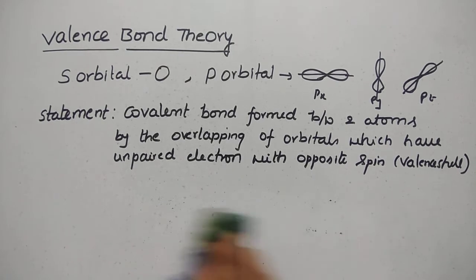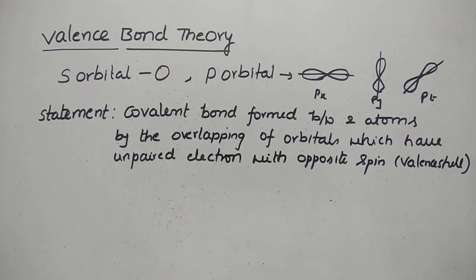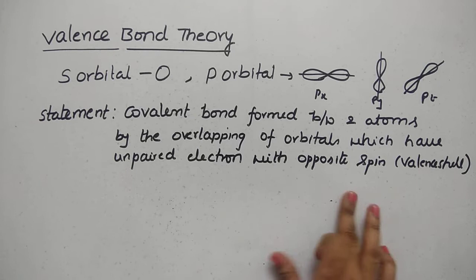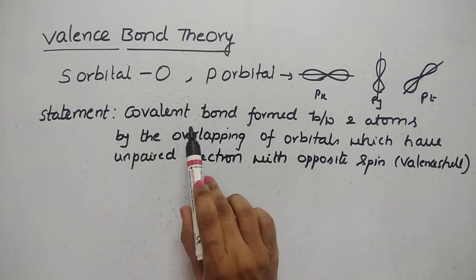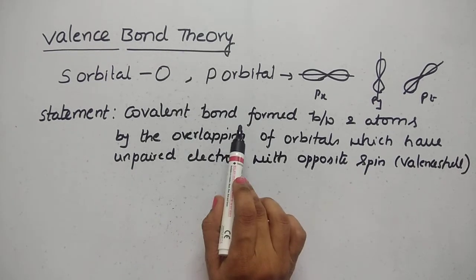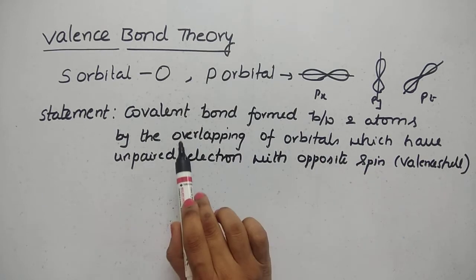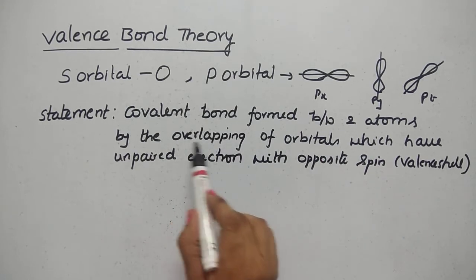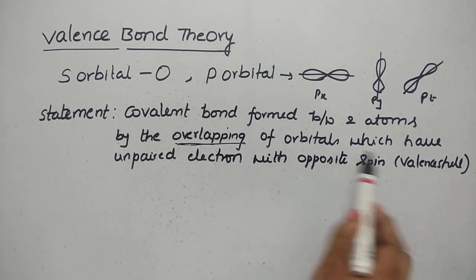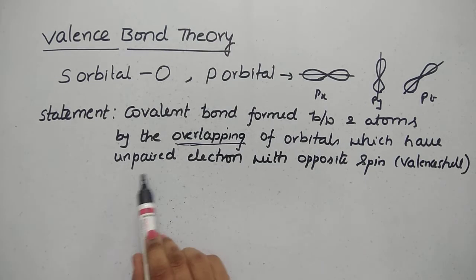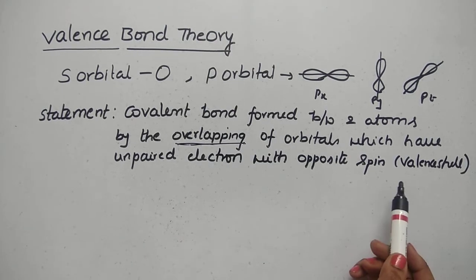So, what is the statement of valence bond theory? The statement is: a covalent bond is formed between two atoms by the overlapping of orbitals which have unpaired electrons with opposite spin.